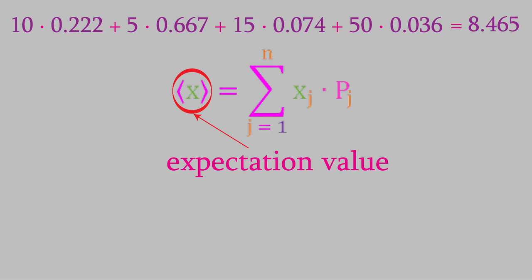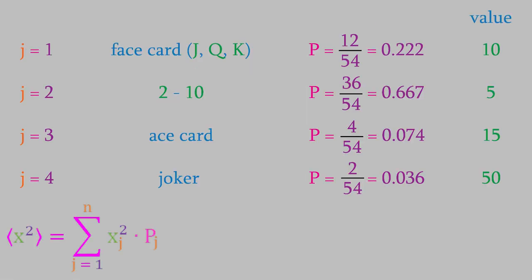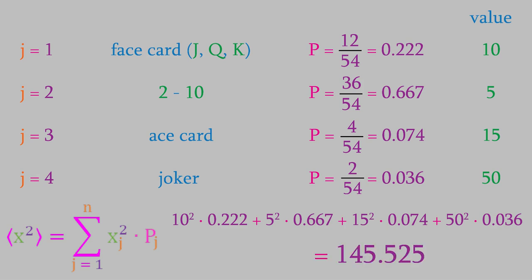So, whenever we want to know an average value of any quantity, we do it by using a similar equation. For example, if we want to calculate the expectation value of x squared, we do it using this equation. If we try that for the dataset we've been working with, here's what we'll get. For each of the four groups, we multiply the square of x by the probability of drawing a card from that group. When we perform this calculation, we get 145.525, so that's the expectation value of x squared.